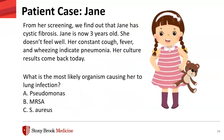Back to patient case: Jane. From her screening we find out that Jane has cystic fibrosis. She's now three years old, doesn't feel well, and her constant cough, fever, and wheezing indicate pneumonia. What is the most likely organism causing her lung infection? The answer is C — Staphylococcus aureus early on in life, and Pseudomonas later in life.